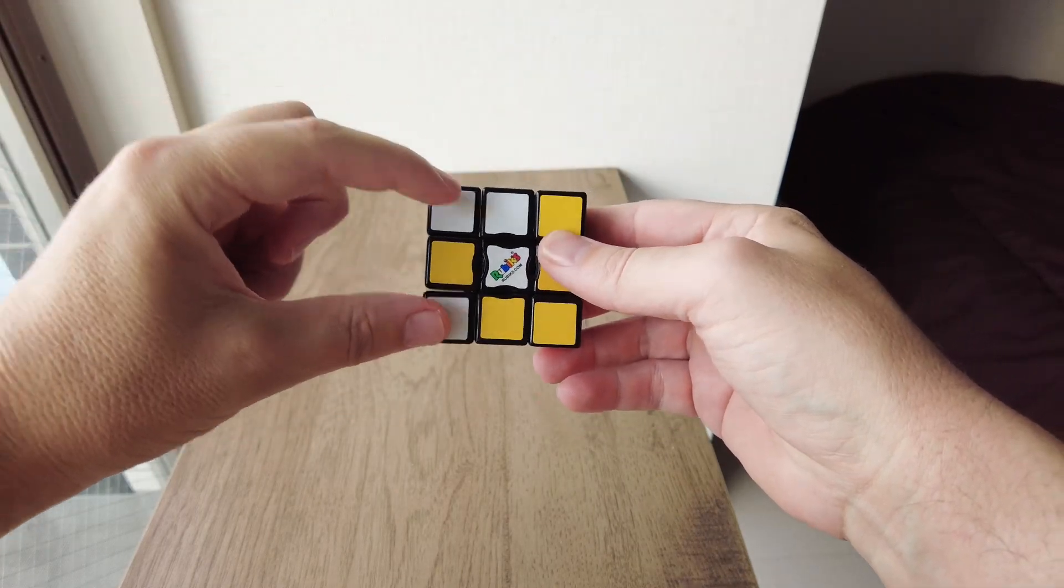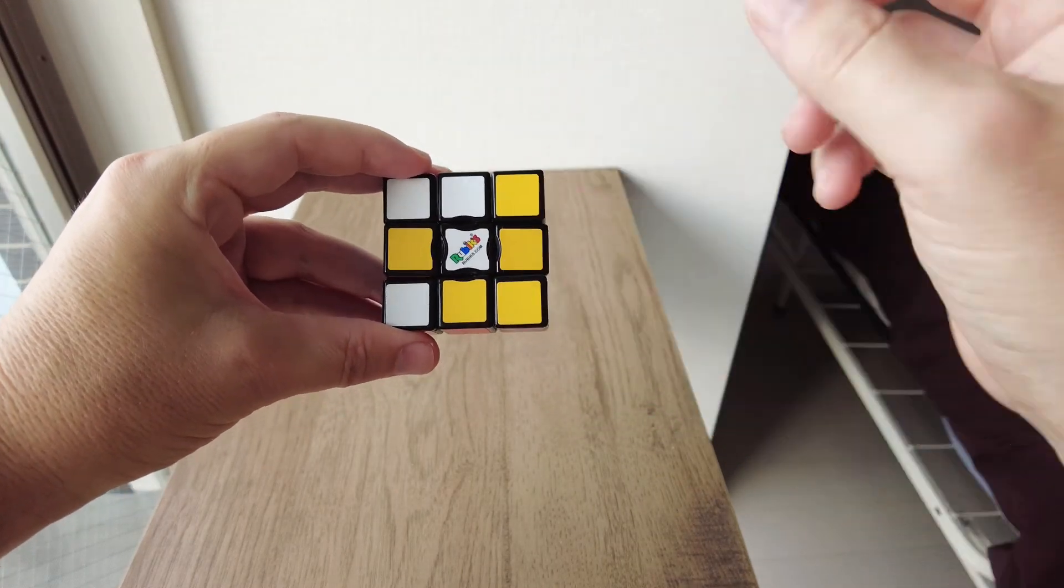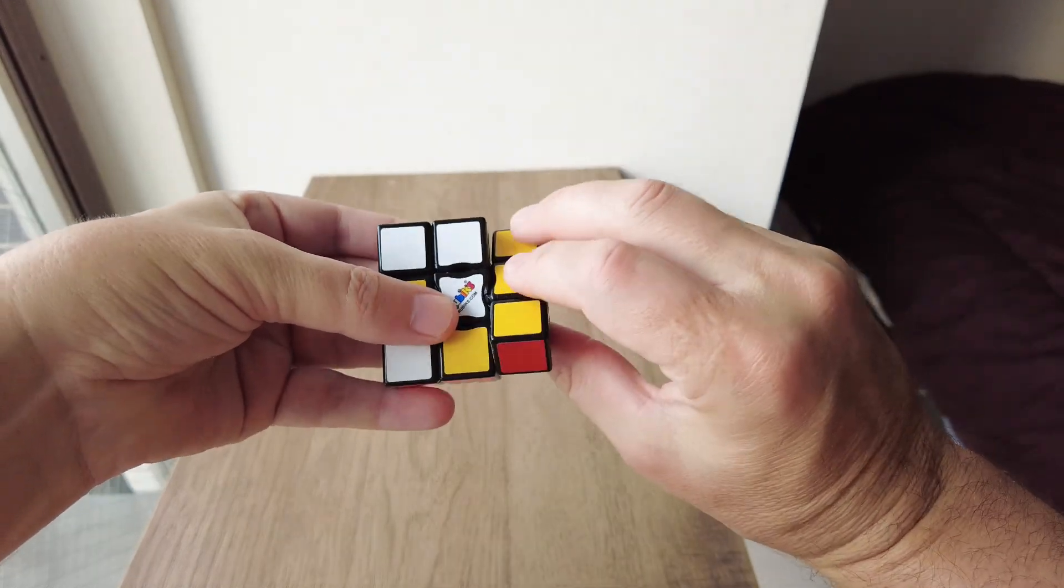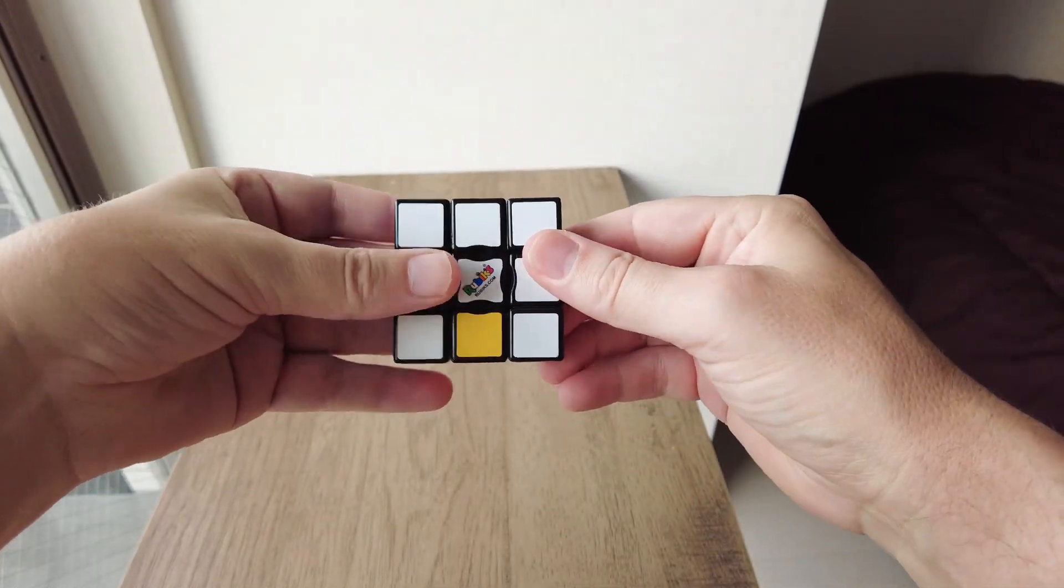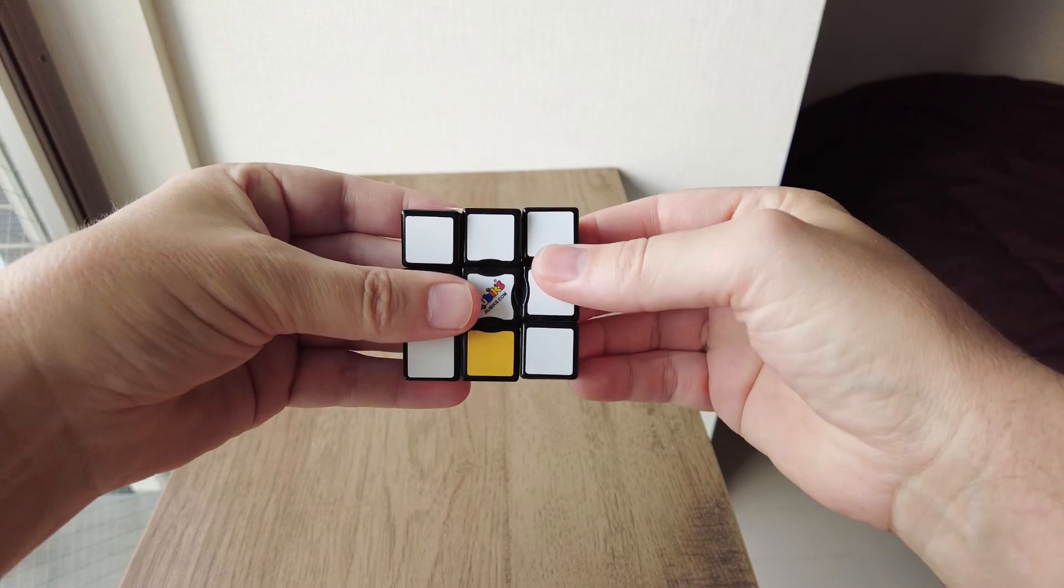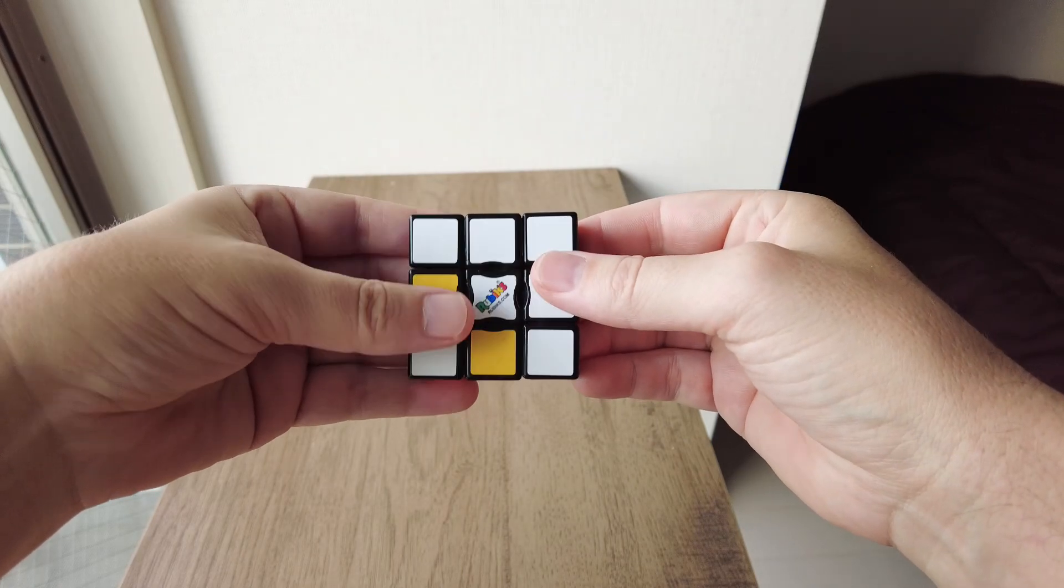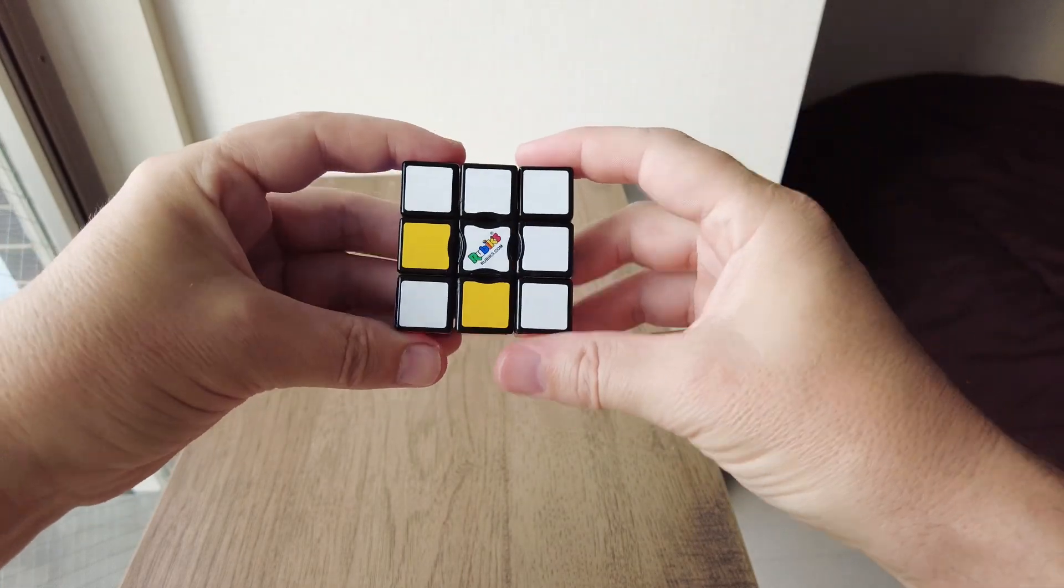Now, you might have these two are white, but these two are not white. In that case, it's very simple. You just turn this bar 180 degrees, and you've got the white cross now.